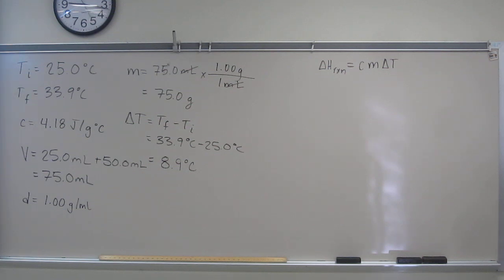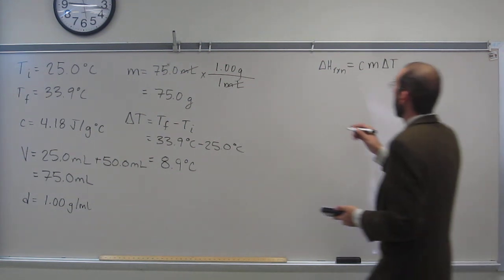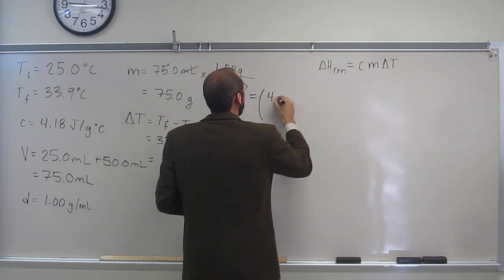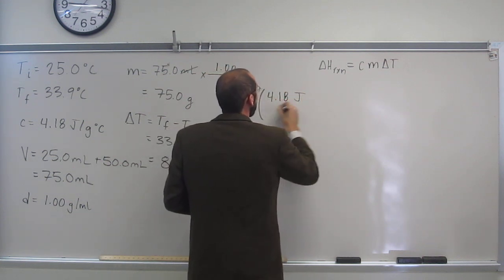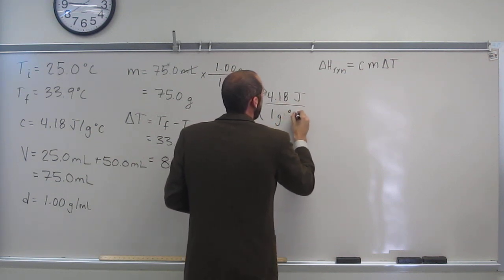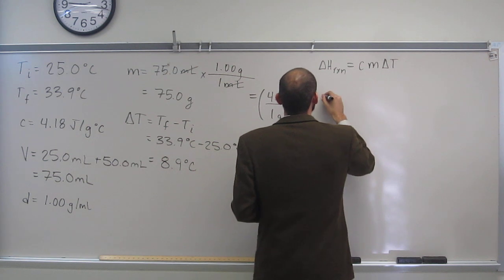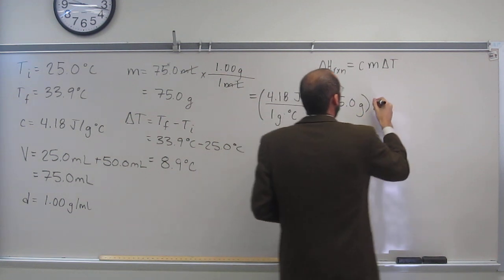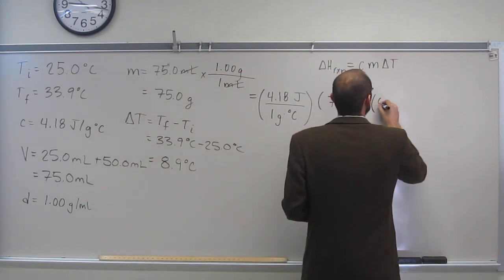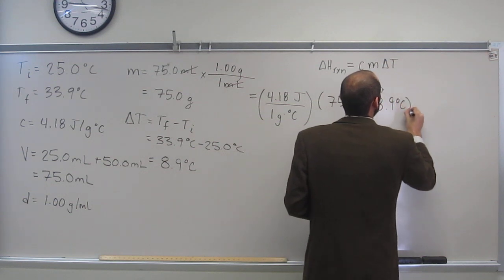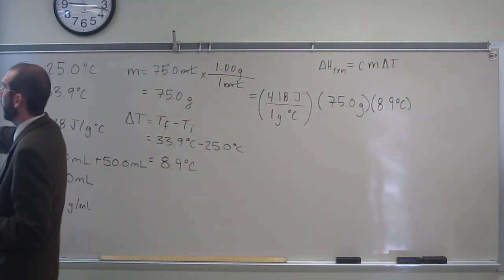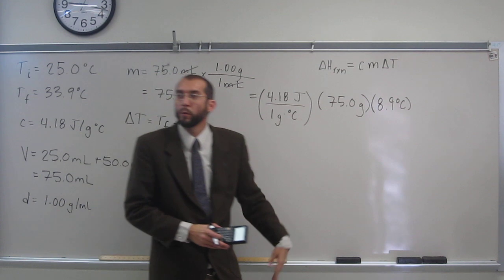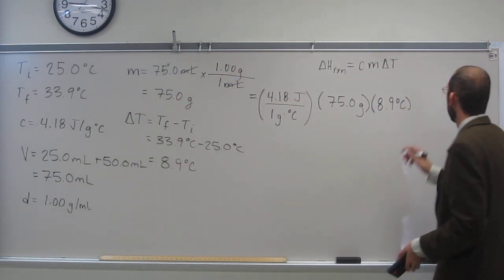Yes, so let's just plug it in. Let's do it together, I'm going to put it over here so we've got some room. So we've got 4.18 joules per gram degree C, we've got the mass which is 75.0 grams, and we've got the change in temperature which is 8.9 degrees C. But it told us we wanted it in kilojoules, right? So we can convert right now.